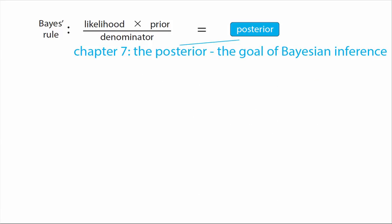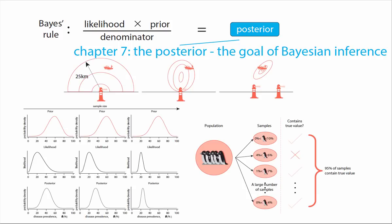In chapter seven, the last chapter in the second part of the book, we talk about the posterior distribution, which really is the goal of Bayesian inference.